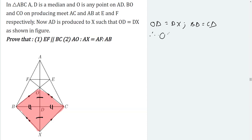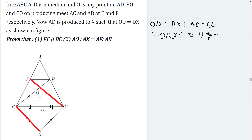Therefore OBXC is a parallelogram. Once we have proved it is a parallelogram, we can write opposite sides as parallel. The opposite sides give us BX parallel to CF, and CX parallel to BE — since if a segment is parallel, its produced part will also be parallel.